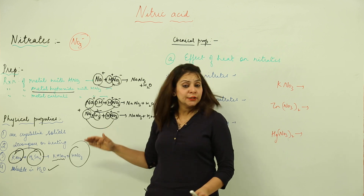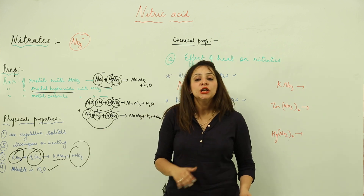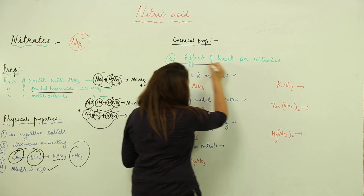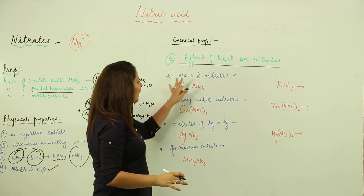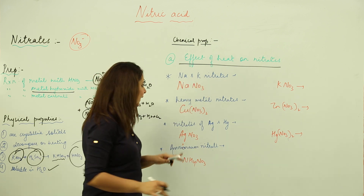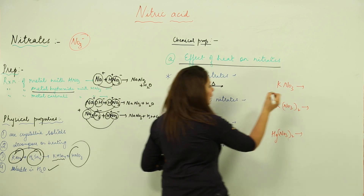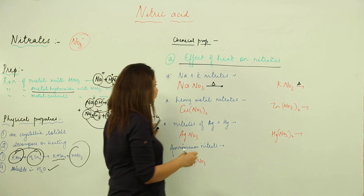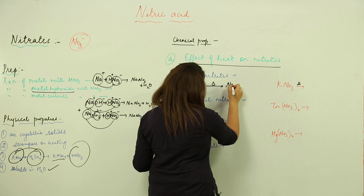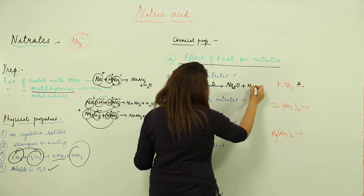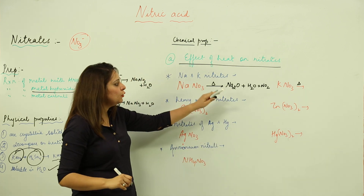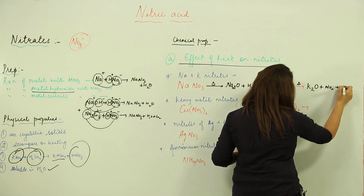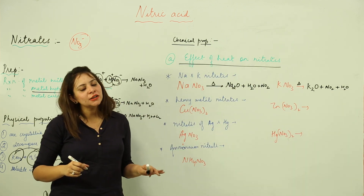Now let's look at how metal nitrates decompose on heating and what products are formed. For sodium nitrate: on heating (delta), it decomposes into Na2O, H2O, and NO2. Similarly, KNO3 decomposes into potassium oxide, NO2, and water. So for alkali metals we get a metal oxide, water, and nitrogen dioxide.